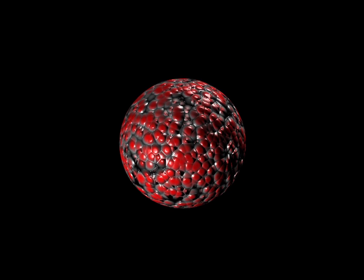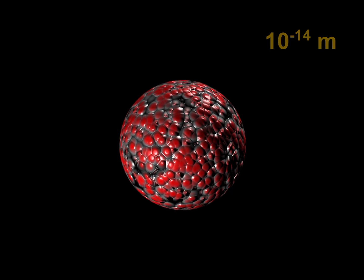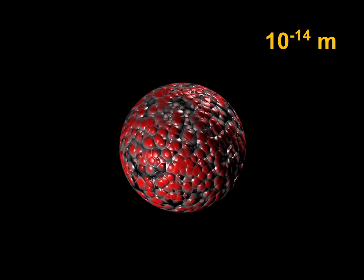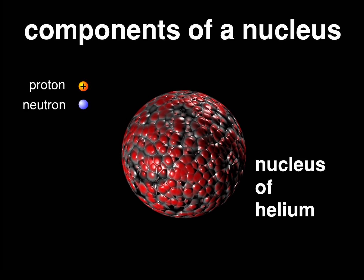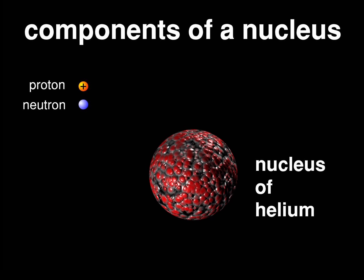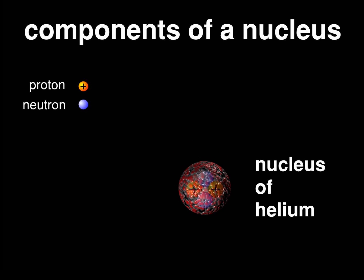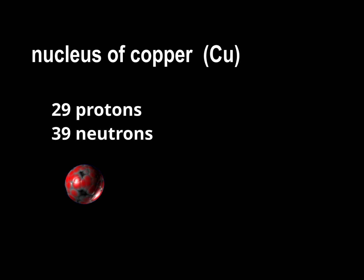Since nuclear matter is so extraordinary, let's look closer at the nucleus. A nucleus also consists of something — we say it has structure. An atomic nucleus consists of protons and neutrons. According to the number of protons in a nucleus, we have a particular chemical element. For example, a nucleus of helium consists of two protons and two neutrons.